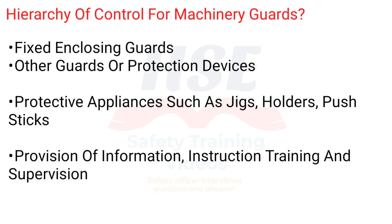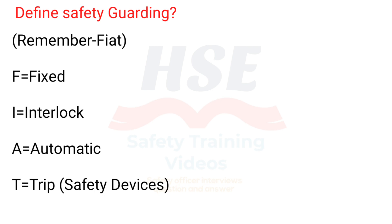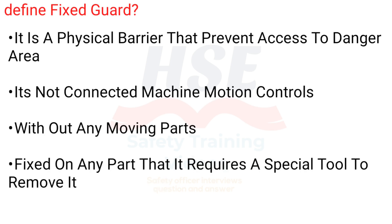Hierarchy of control for machinery guards: fixed enclosing guards; other guards or protection devices; protective appliances such as jigs, holders, push sticks; provision of information, instruction, training and supervision. Define safety guarding - remember FIAT: F equals Fixed, I equals Interlock, A equals Automatic, T equals Trip. Safety devices. Define fixed guard: it is a physical barrier that prevents access to the danger area. It is not connected to machine motion controls, without any moving parts. Fixed on any part that requires a special tool to remove it.